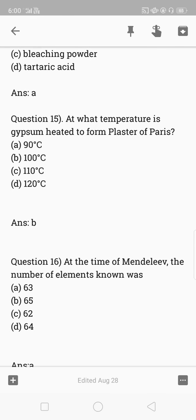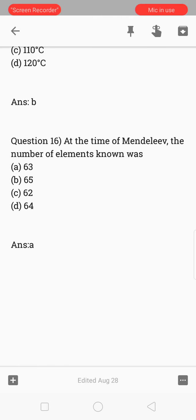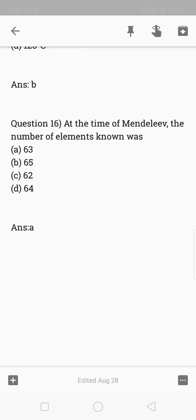At what temperature is gypsum heated to form plaster of Paris? 100 degree Celsius. At the time of Mendeleev, the number of elements known was 63.